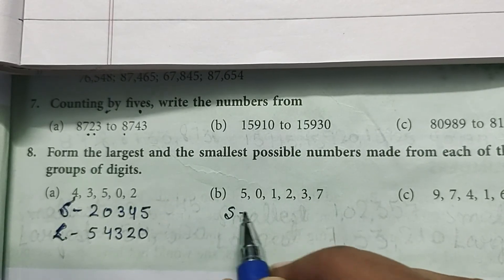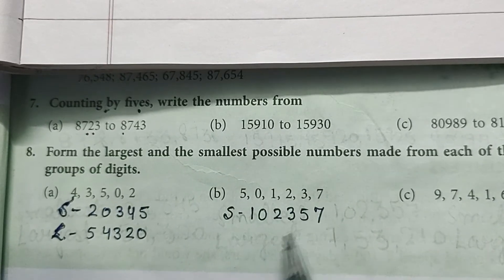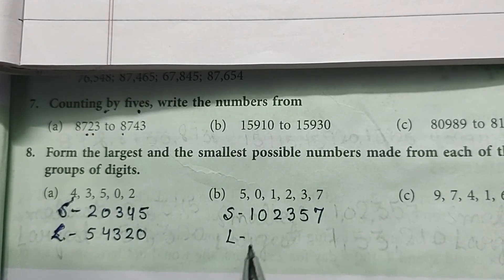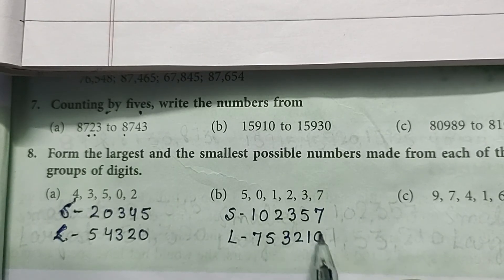Now B part: 5, 0, 1, 2, 3, 7. Smallest number is 1, 0, 2, 3, 5, 7. Largest number is 7, 5, 3, 2, 1, 0.